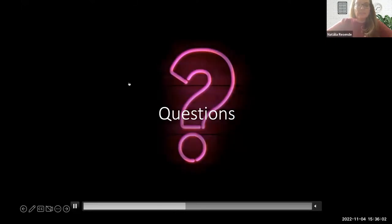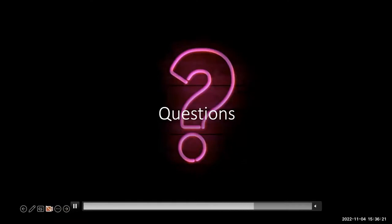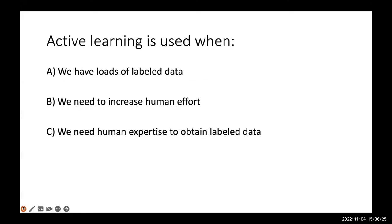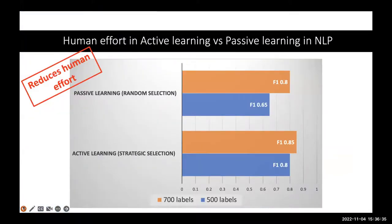A question from a participant: looking at the 500 vs. 700 data example, when using active learning you get the same performance with 500 data as with 700 using passive learning — but a human has been involved in labeling. Is the total amount of data labeled with active learning still less than 700? Yes, you can select from the pool the most useful instances and mix strategies — automatically selecting useful instances while also using a human to label where the model is uncertain.